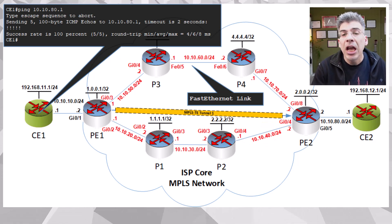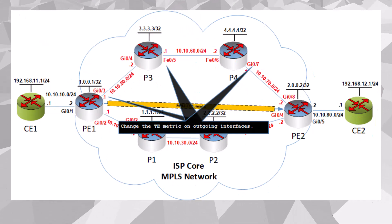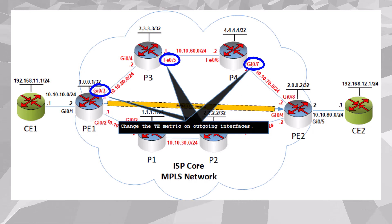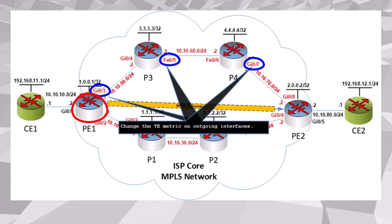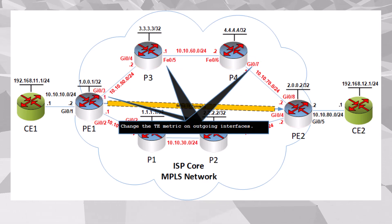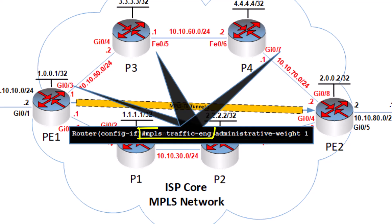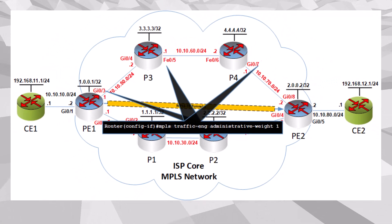It is possible to change the TE metric of the underlying OSPF topology, causing the tunnel to take a different path. To do this, we need to change the TE metric on the specific outgoing interfaces along the PE1 → P3 → P4 → PE2 path. This can be done in interface configuration mode using the MPLS traffic engineering administrative-weight command, setting the TE metric to a value of one. By setting it to one — the lowest possible cost — we ensure this path has a better TE metric than the other path, assuming the TE metric of the other path is larger by default.